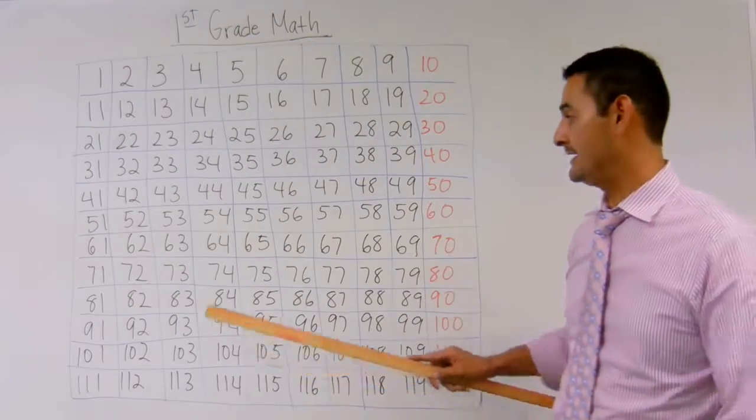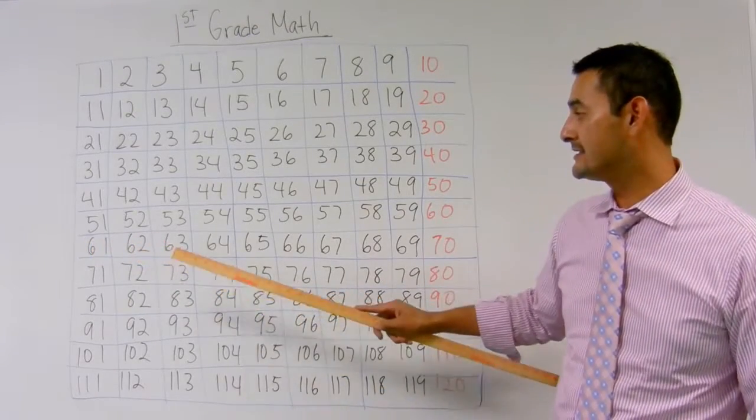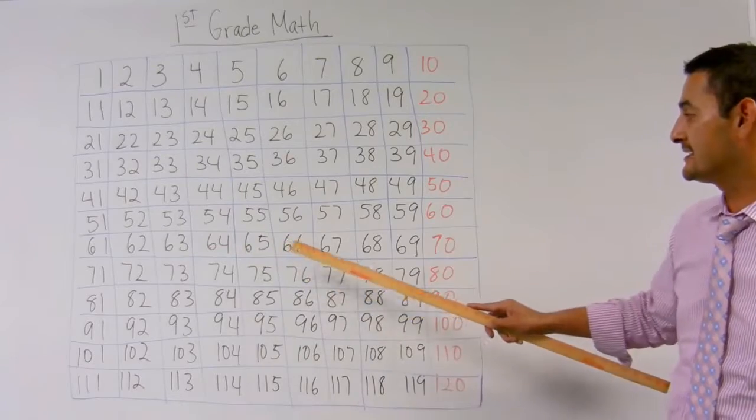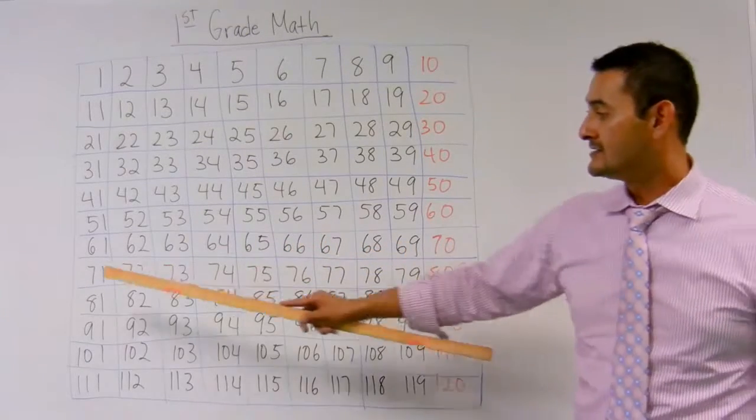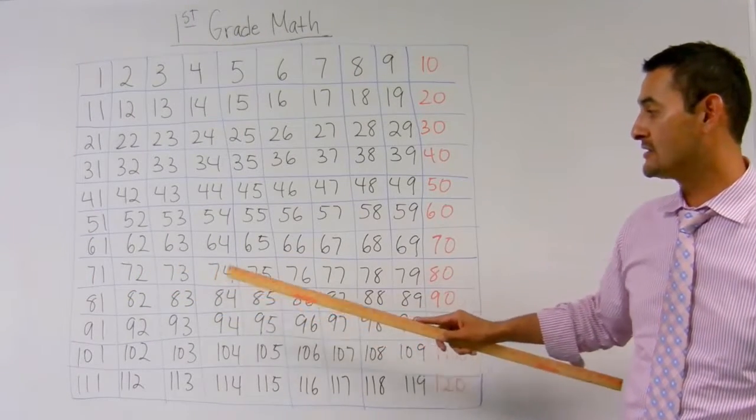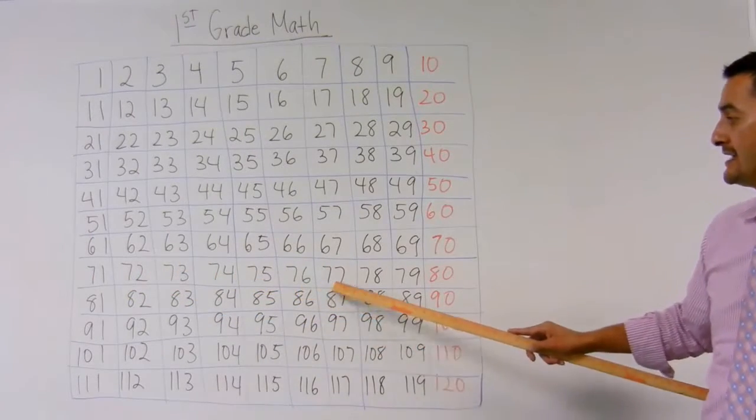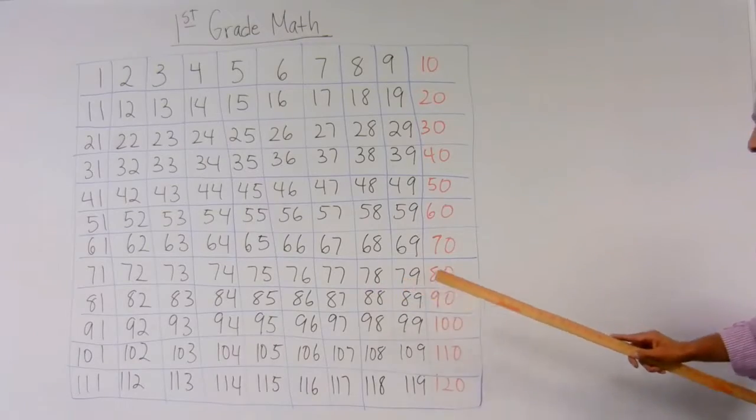You're doing outstanding! 61, 62, 63, 64, 65, 66, 67, 68, 69, 70, 71, 72, 73, 74, 75, 76, 77, 78, 79, 80.